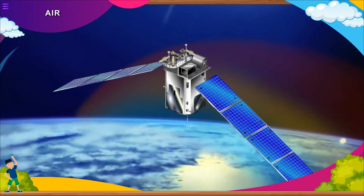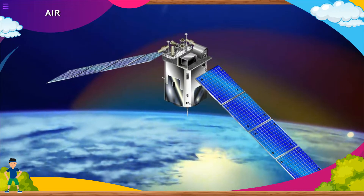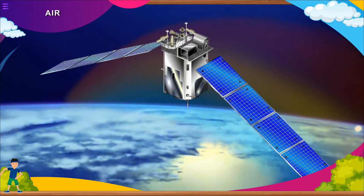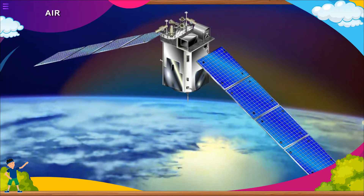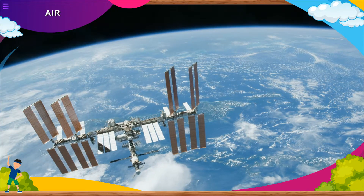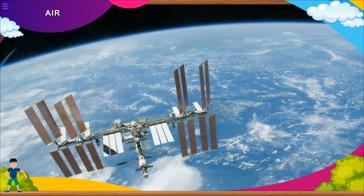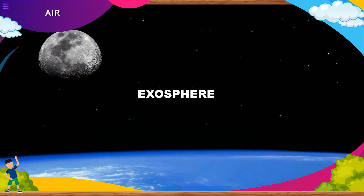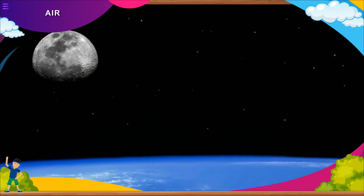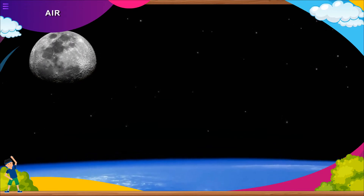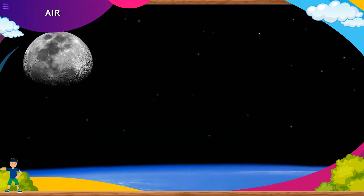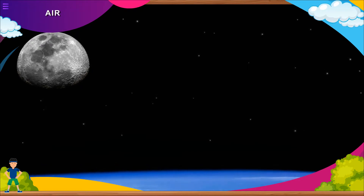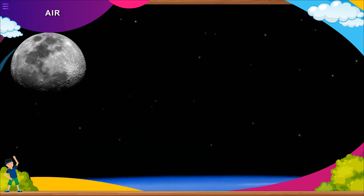Thermosphere: It is the fourth layer. Temperature is very high in this layer and may even reach above 200 degrees Celsius. Space shuttles orbit in this layer. Exosphere: It is the outermost layer of the atmosphere. The air is very thin here, and there is no air beyond this layer.